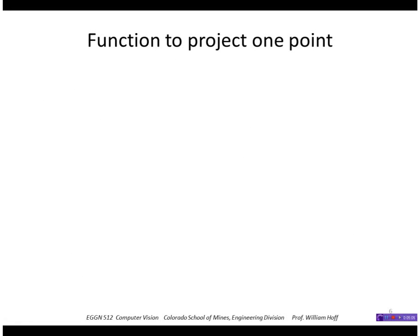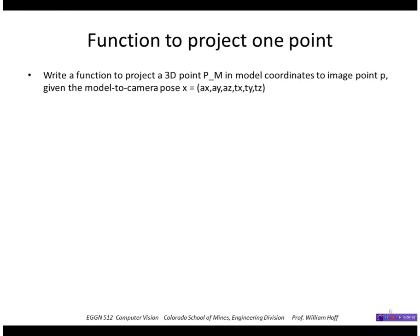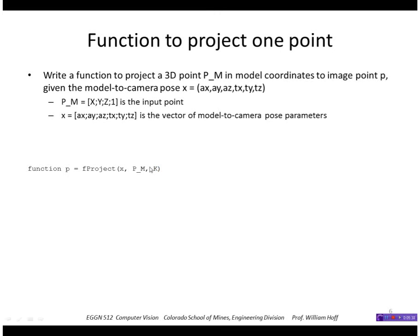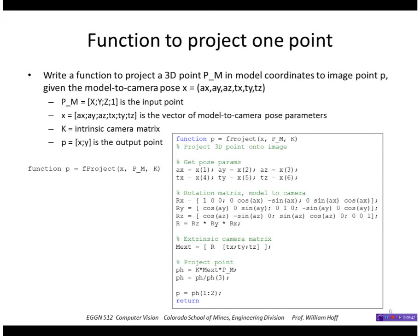Let's look at a function to project one point from model coordinates to image given a hypothesized pose. These are the angles ax, ay, az and the translation tx, ty, tz. This function will look like fProject—we'll pass in the pose in x, the point we want to project p_m, and the intrinsic camera parameter matrix K, and we'll return the point p. So in this function, we first extract the pose parameters from x, construct the rotation matrix, construct the extrinsic camera parameter matrix, project the point, divide by the third element of the point, and then return the first two elements of the point, which are just the x and y.